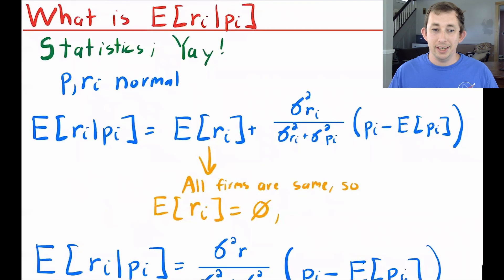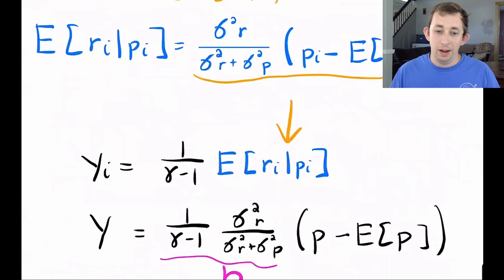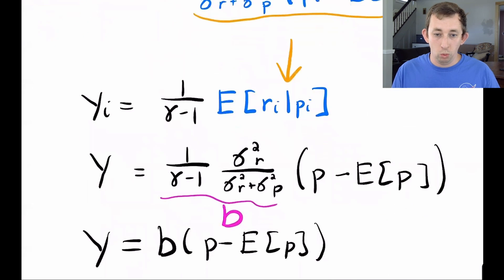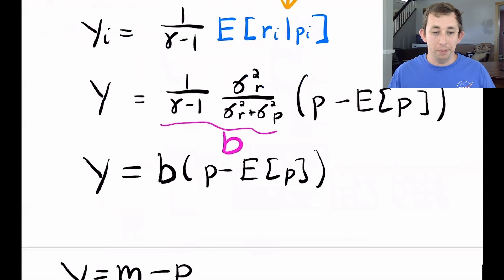And now as you might guess, I've got to figure out what in the world is expected value of my relative price given my price. We're going to say that both the price and the relative price are normally distributed. So I'm going to use statistics to get to this equation here. Notice that if all firms are the same, the expected relative price is zero, because we should all be wanting to set the same relative price. So that drops out and I'm left with this lovely formula right here.